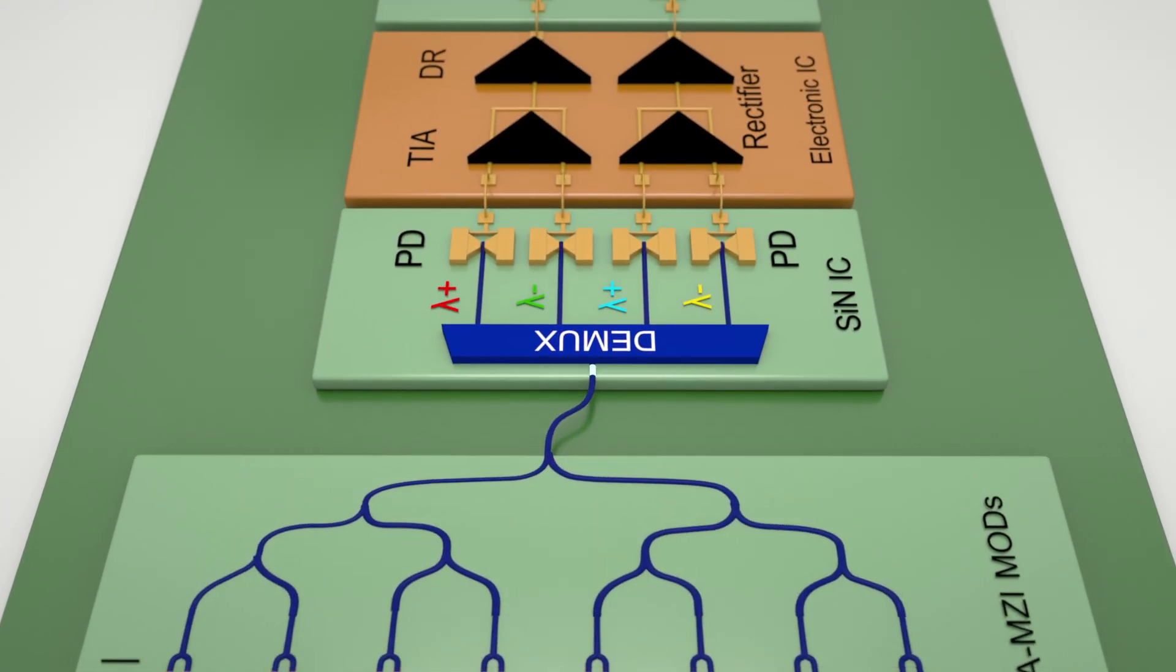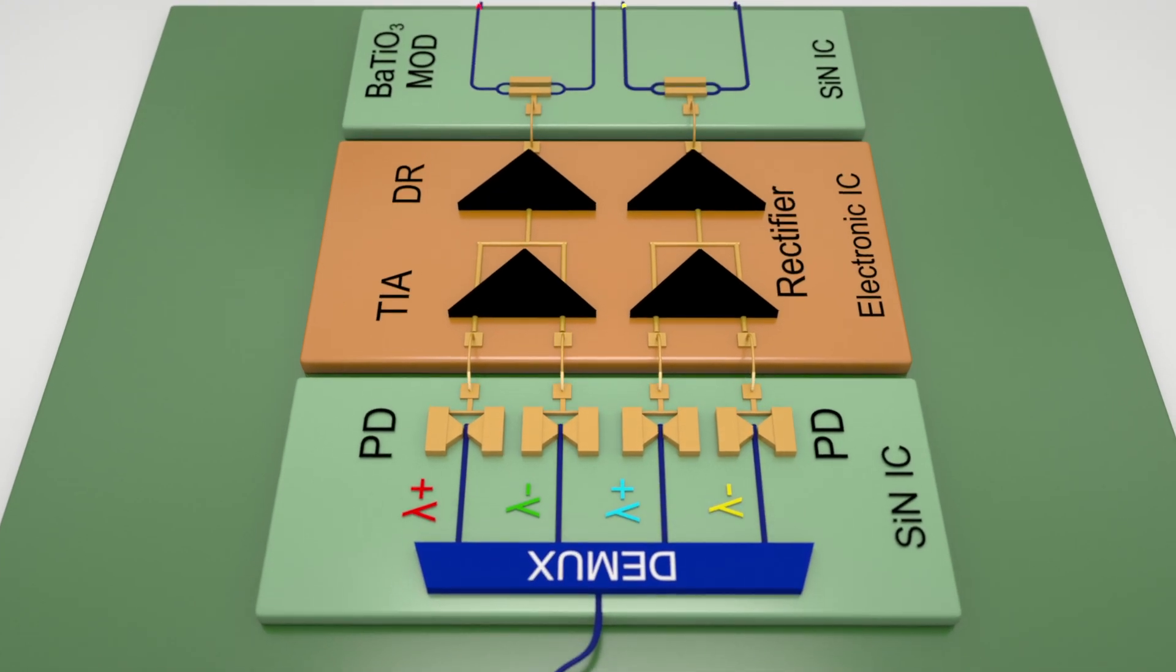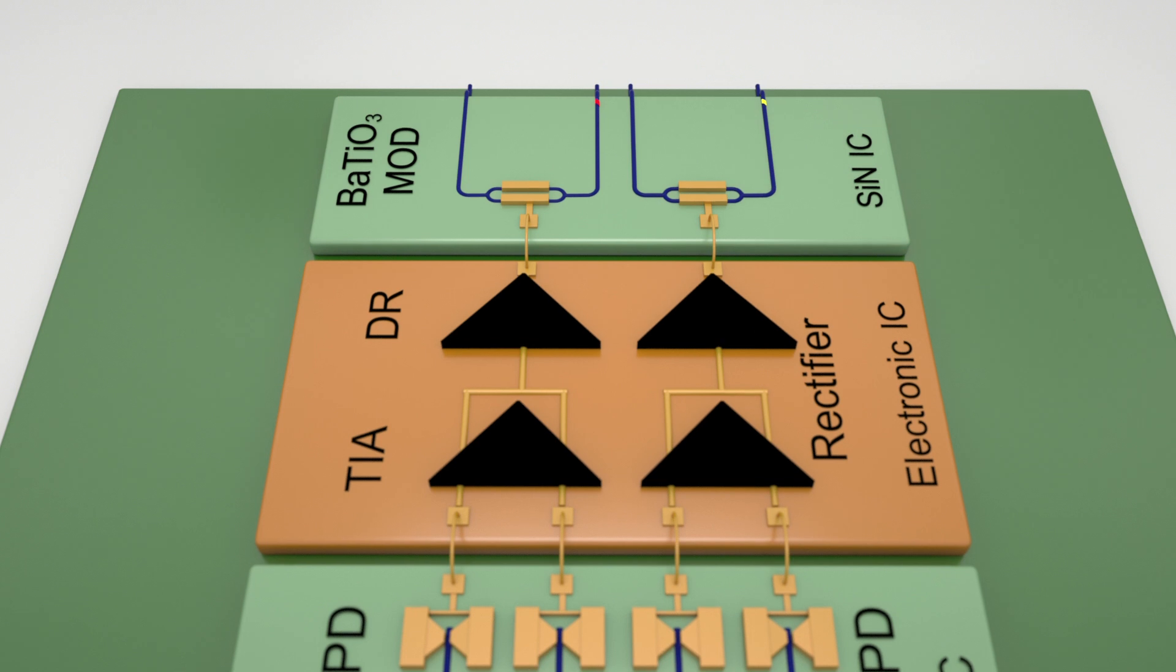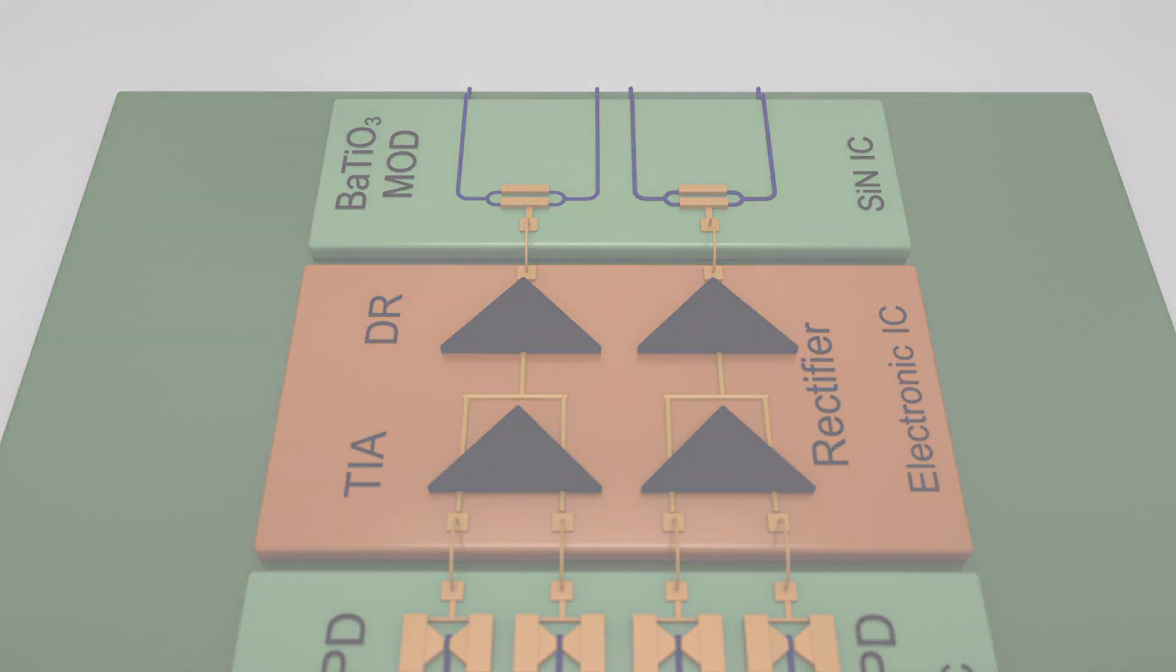Signal detection will be wavelength selective, using balanced photodetectors which, together with the next layer's modulator, forms a nonlinear activation function.